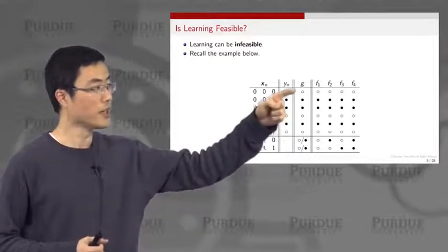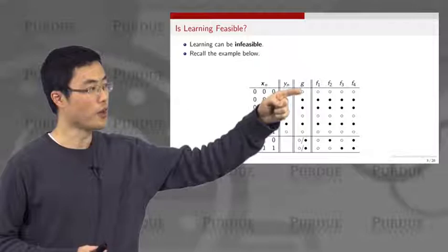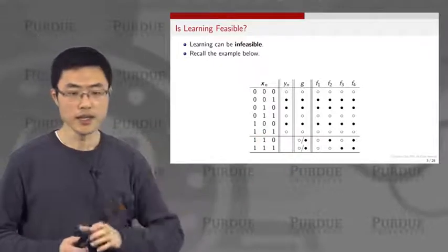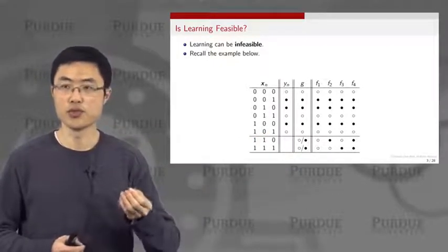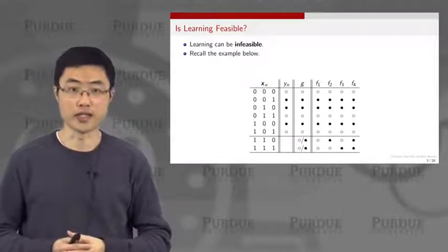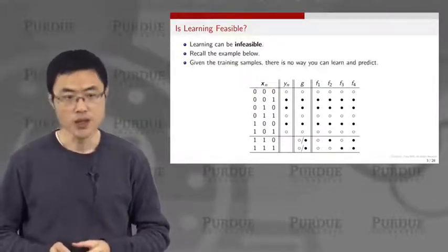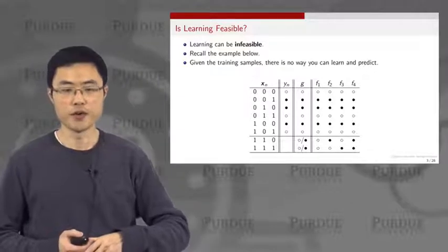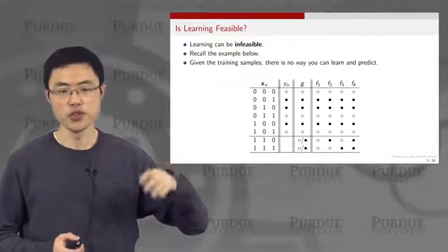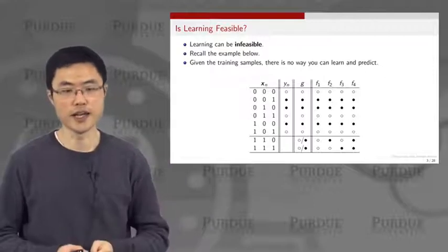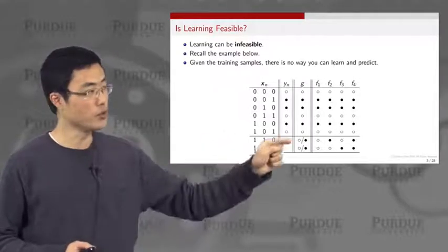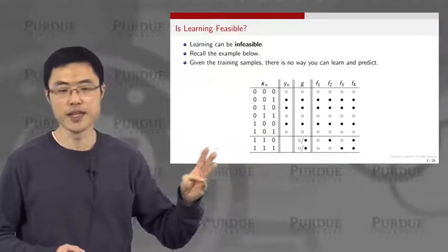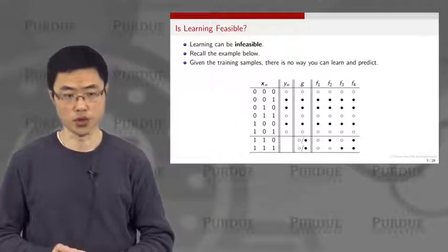In the middle of this diagram, you can see the final hypothesis G that has all six given cases, but for the last two cases, you can choose the labels to be either 0 or 1, and there is really no way to decide. Given all these training examples, there is no way to learn and predict, because for these six training examples you still have four possibilities — 0,0 / 0,1 / 1,0 / 1,1 — and there is no way to determine which one is correct.